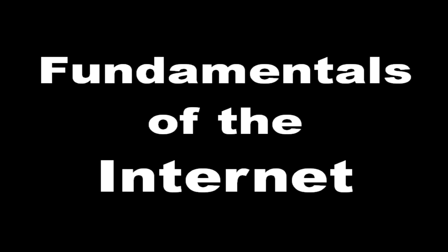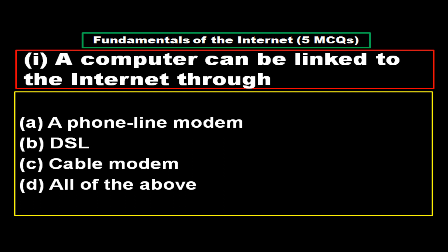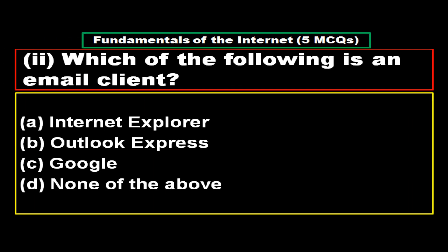Multiple choice questions from the topic: Fundamentals of the Internet. Question 1: A computer can be linked to the internet through — option A: online modem, option B: DSL, option C: cable modem, option D: all of the above. The right answer is option D, all of the above.